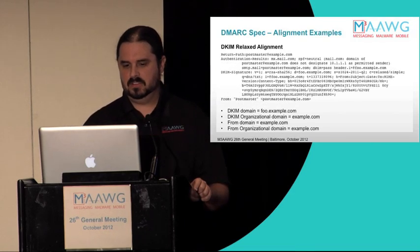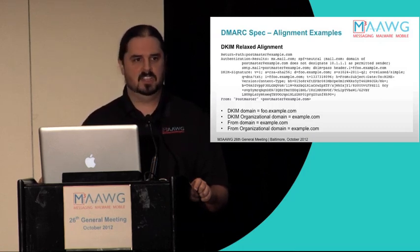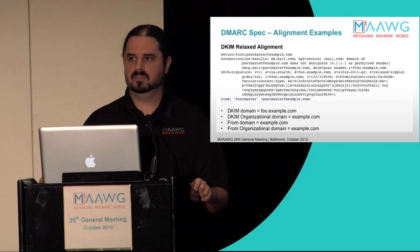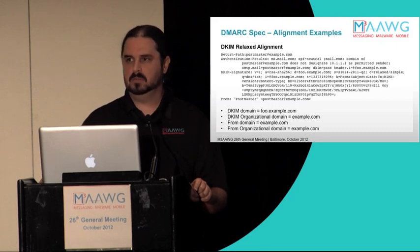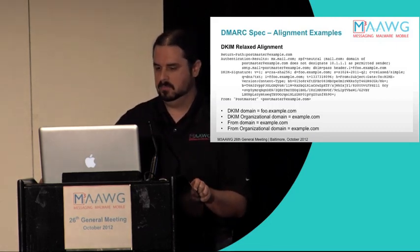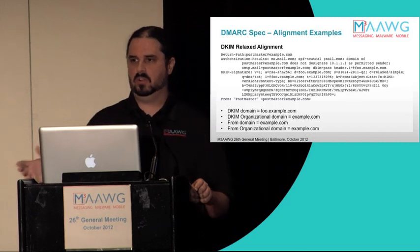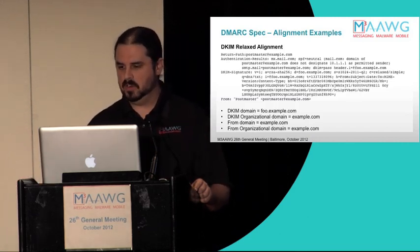Here is an example of DKIM relaxed alignment. SPF is neutral, possibly because this email was forwarded from one service to another. The DKIM signature provides foo.example.com in the D= as its authenticated identifier, and the From domain is example.com. They share the same organizational domain, so the email is aligned according to DMARC.